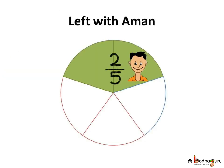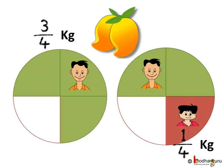So, two by five parts of the cake is left with Aman after sharing one by five parts with his friend. Now let us take another example. Aman has three by four kg of mangoes. If he gives one-fourth kg of mangoes to his friend, then how much is left with him?